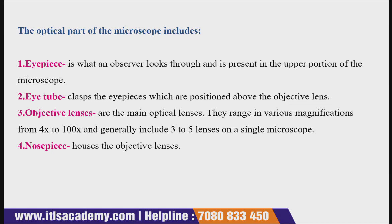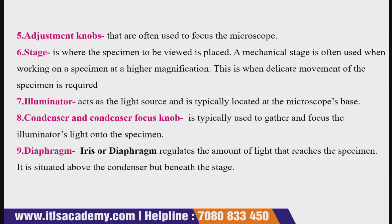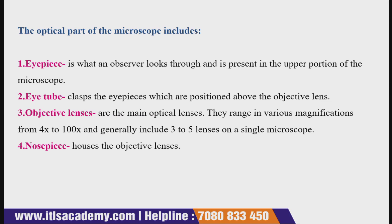The optical part of the microscope has several components. First is the eyepiece, second is the eye tube, third is the objective lenses, fourth is the nosepiece, then there is an adjustment knob, stage, illuminator, condenser and condenser focus knob, and finally a diaphragm. The eyepiece is what the observer looks through and is present in the upper portion of the microscope. The eye tube connects the eyepiece to the objective lenses.